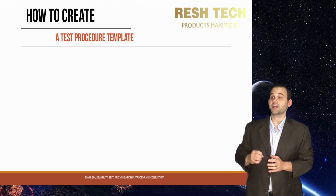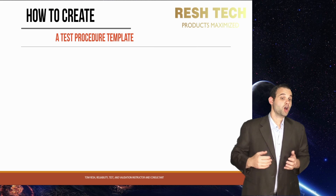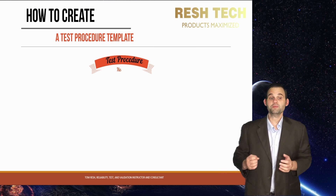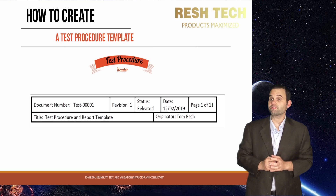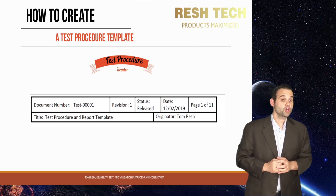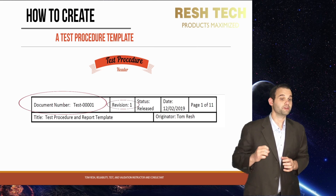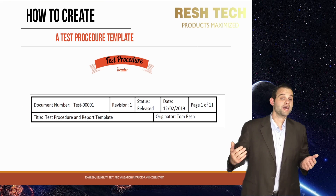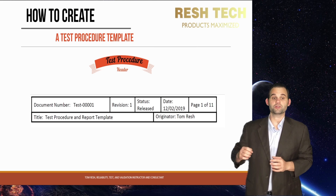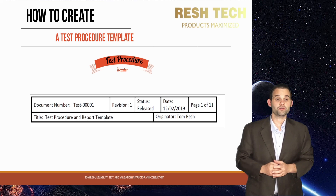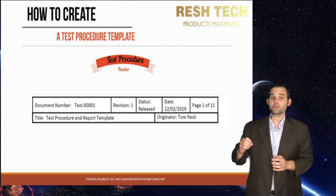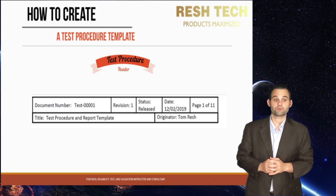Let's cover how to create a test procedure template, starting with document control. The document control information should be in a header on every page of your document. You will see things such as document numbers and revisions. These indicate the document control number for your test procedure and the revision of the procedure you are viewing. As an operator or executor of the test, you need to ensure that you have the correct document open and that you are using the latest release revision.